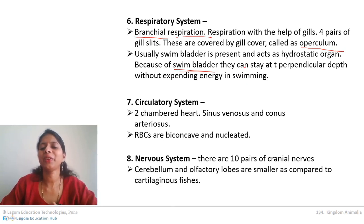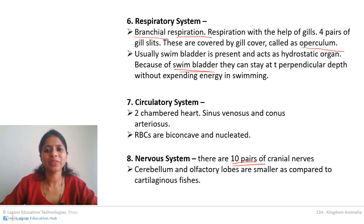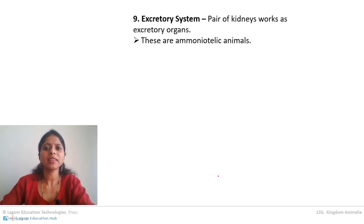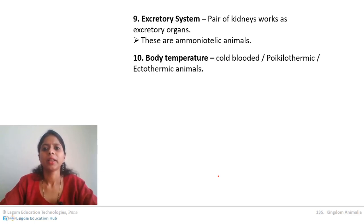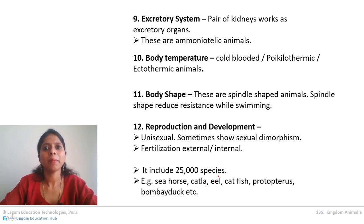Regarding the nervous system — these fish have 10 cranial nerves (nerves arising from the brain). The cerebellum and olfactory lobes are not as well developed as in Chondrichthyes. The excretory system is ammonotelic; kidneys are the excretory organs and excretion also occurs through the skin. They are cold-blooded animals with a spindle-shaped body. Reproduction: mostly unisexual, no sexual dimorphism (though sea horse is an exception). Fertilization may be external or internal; development may be direct or indirect.